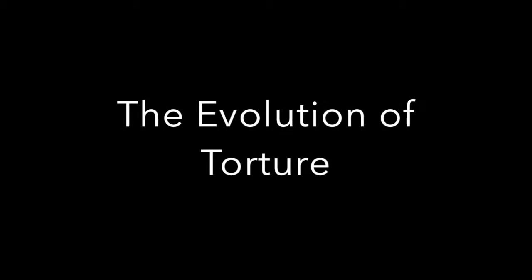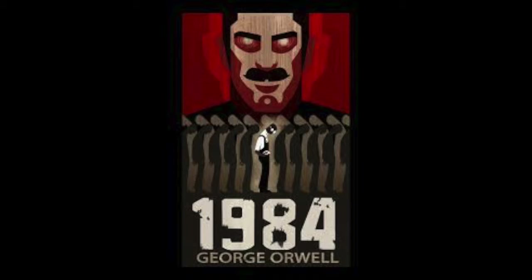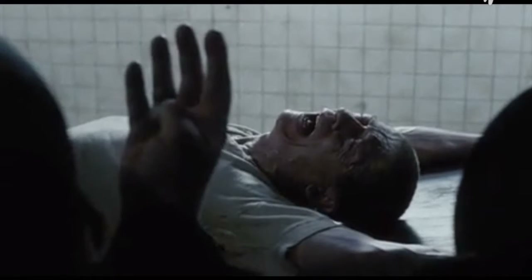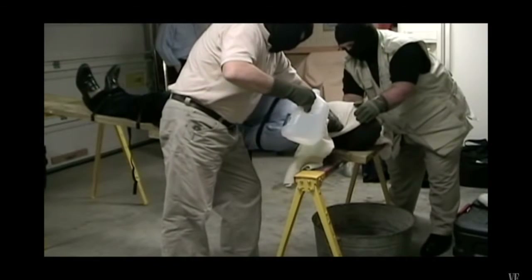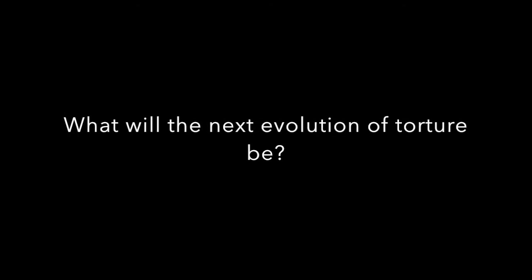Throughout the video, we have explored historical and modern-day examples of torture in order to emphasize the theme of the evolution of torture. This connects to the book 1984 by George Orwell, as it shares similar themes with the topic of torture. Torture has been happening, and it still continues to happen. It has gone through a major evolution. But what will the next evolution of torture be?